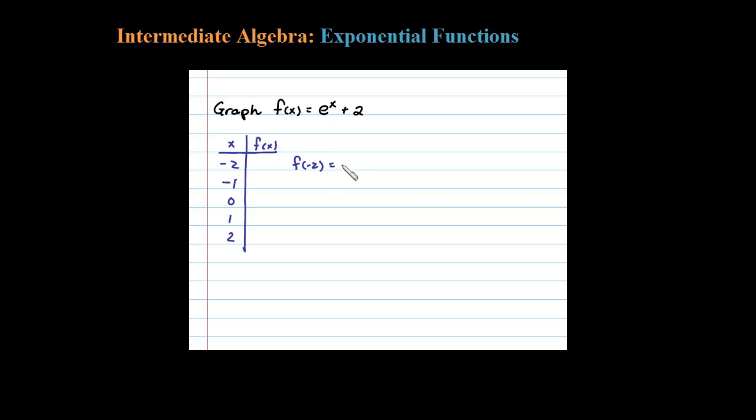In this case is e to the negative 2 power plus 2, which is equal to 1 over e squared plus 2. On a calculator is approximately equal to 2.14. I'm just going to round off to two places.